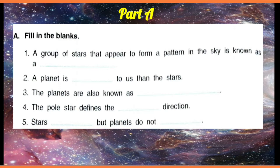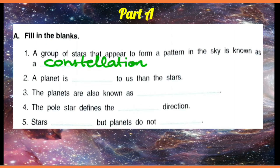A group of stars that appear to form a pattern in the sky is known as a dash. The group of stars which has a proper shape is known as constellation. C-O-N-S-T-E-L-L-A-T-I-O-N, constellation.